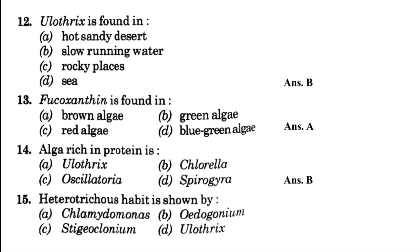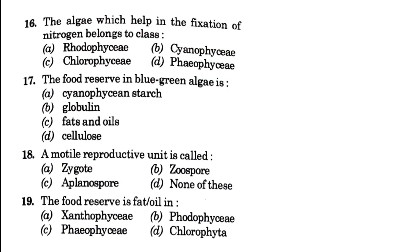Heterotrichous habit is shown by — blank: Chlamydomonas, Oedogonium, Stigeoclonium, or Ulothrix. The answer is option C, that is Stigeoclonium. Then, the algae which help in fixation of nitrogen belongs to class — blank: Rhodophyceae, Cyanophyceae, Chlorophyceae, or Phaeophyceae. The answer is B, that is Cyanophyceae.